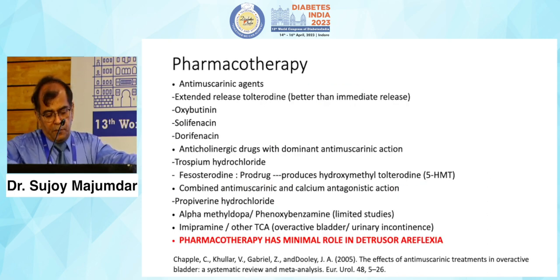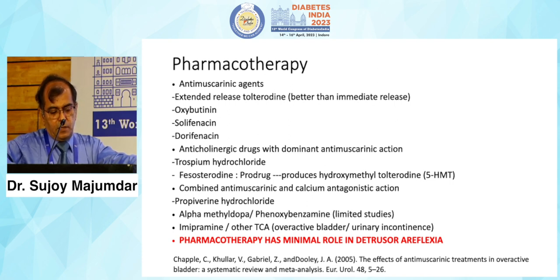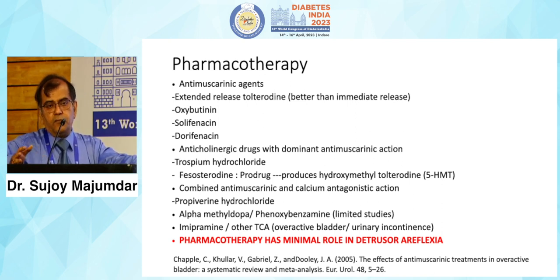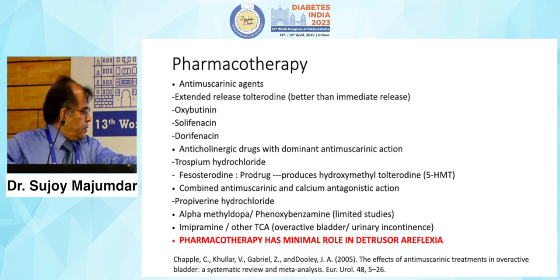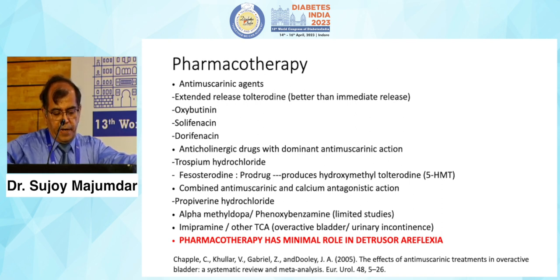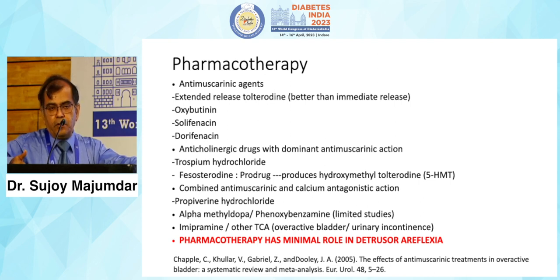For pharmacotherapy, anti-muscarinic agents like extended-release tolterodine, oxybutynin, solifenacin, and darifenacin have shown some effect, though not large studies — with only 30 to 40 percent success rates in the majority. Anti-cholinergic drugs with dominant anti-muscarinic actions like trospium hydrochloride and fesoterodine, and combined anti-muscarinic and calcium-antagonistic actions like propiverine hydrochloride, have been tried. Limited studies exist with alpha-methyl-dopa and phenoxybenzamine. Tricyclic antidepressants like imipramine have been tried for overactive bladder and urinary incontinence, but use is restricted by the side effects of this drug class.